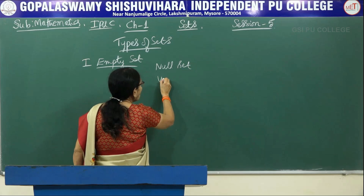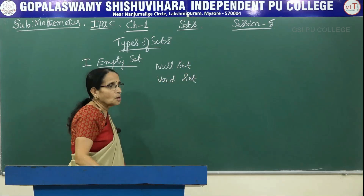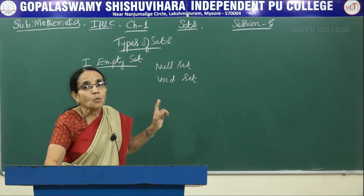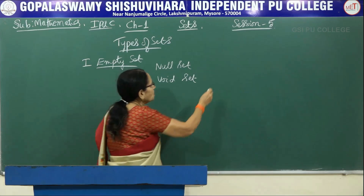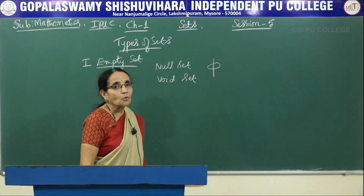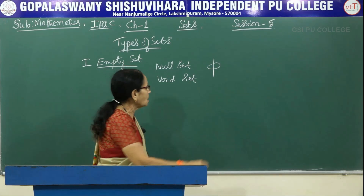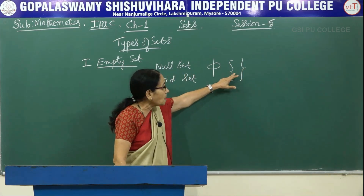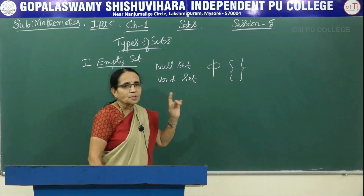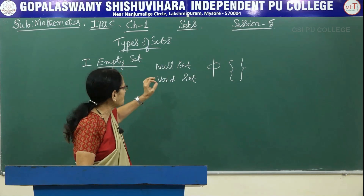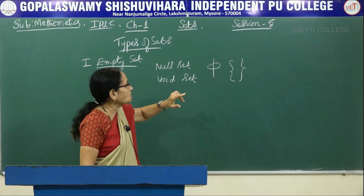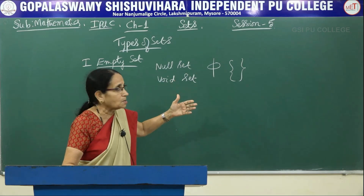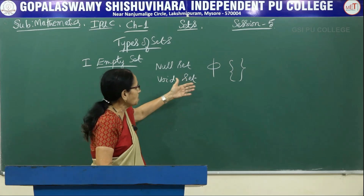A set which does not contain any element is called an empty set, a null set, or a void set. How to denote it? We use this notation — it is a Greek alphabet, phi (spelled p-h-i). Or you can write empty brackets like this. Don't write zero there — nothing means don't write zero. If you write zero, that becomes an element. So a set which does not contain any element is denoted by the Greek alphabet phi or a pair of empty square brackets.